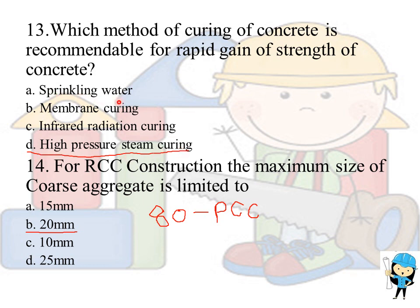For RCC construction, the maximum size of coarse aggregate is limited to 20 mm. For PCC, 80 mm is used for ease of workability. In exceptional cases, 100 mm aggregate is used in PCC.